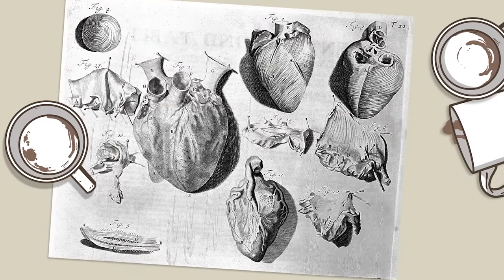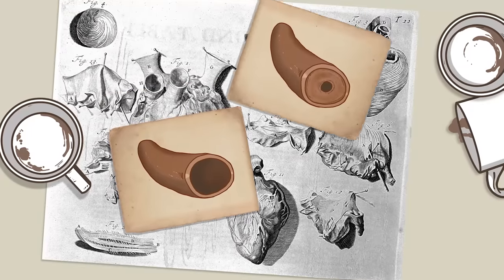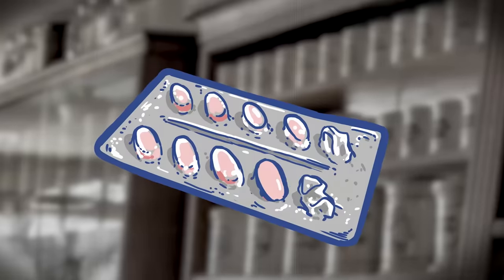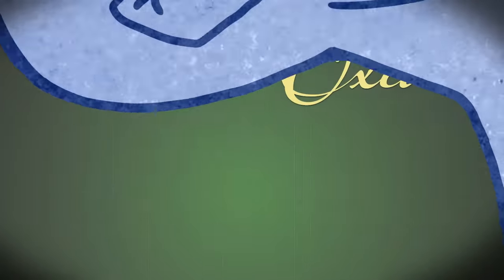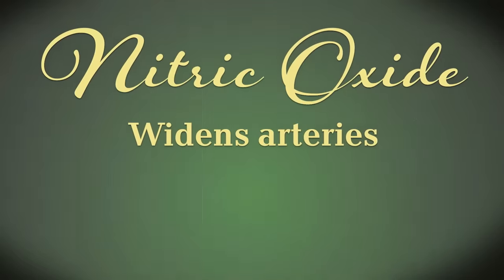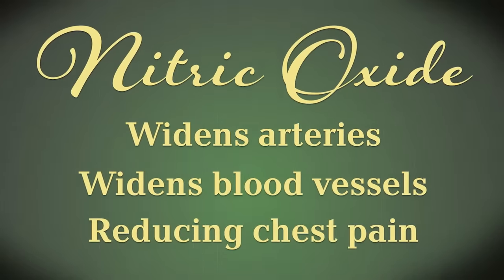Nitroglycerin capsules, sprays, ointments, and patches are used to treat a condition called angina, a common side effect of some kinds of coronary heart disease. Chest pain can happen when your heart isn't receiving enough blood, usually due to narrow blood vessels. When consumed, the body converts NTG into a compound called nitric oxide, which widens arteries and blood vessels, reducing chest pain.